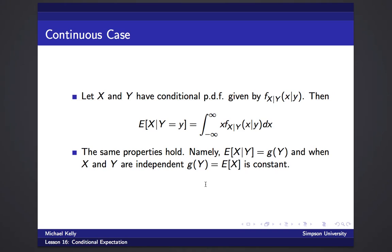And the same properties are going to hold, so the expected value of x given y in general will be a random variable, or not a random variable, sorry, a function that depends on y. And whenever x and y are independent, then that function is just the constant e of x. So given y, it doesn't change the value at all.